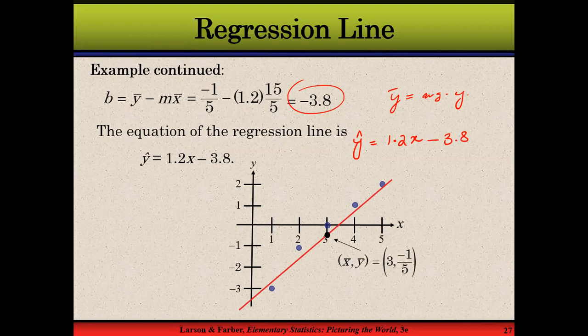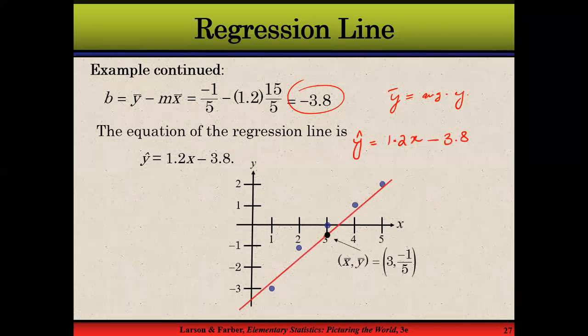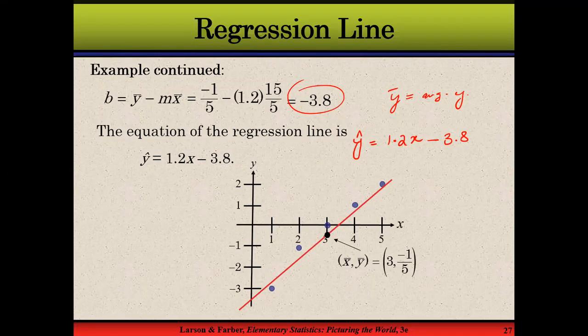Did you understand how to calculate this? Yes sir. There is a problem, sir. Where it's written in brackets, 3 comma minus 1 by 5, what is this? These are the coordinates of that point.